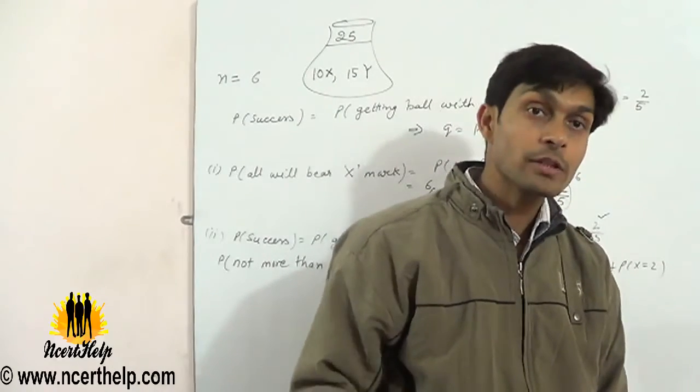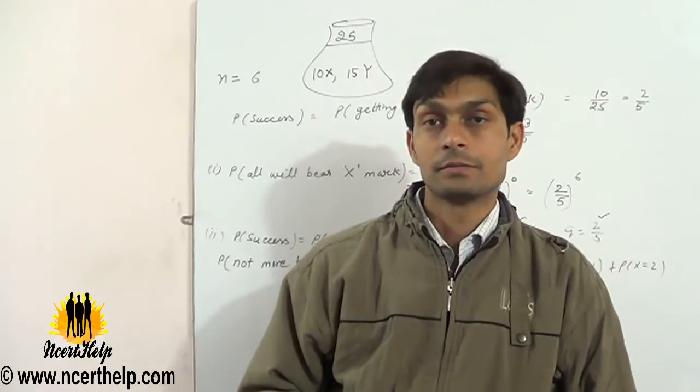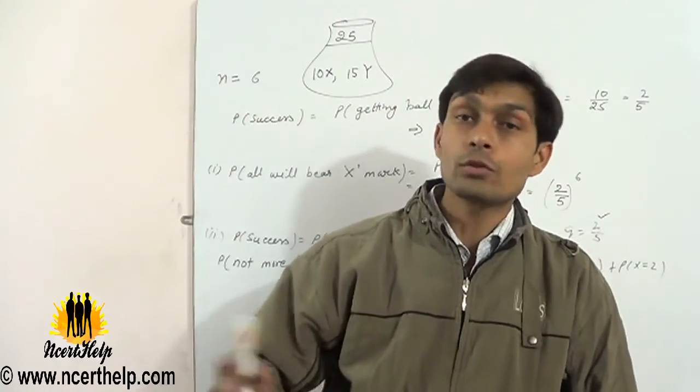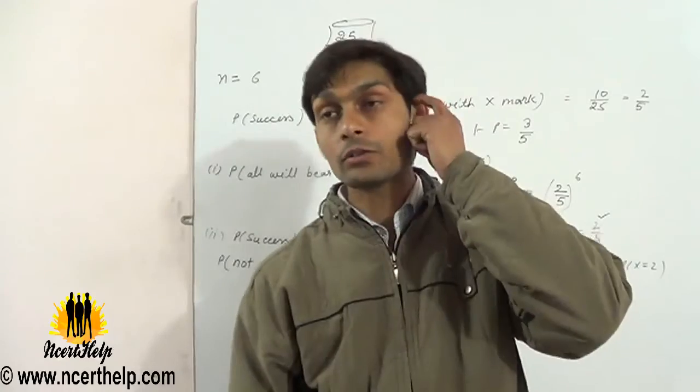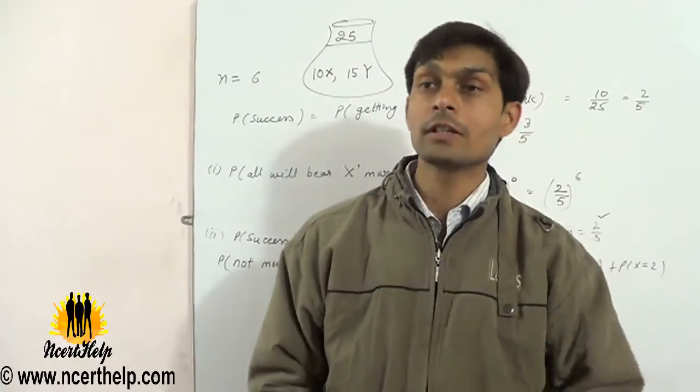When you have equal marks, you can consider either p or q as success, it won't make a difference. Whether you take X as success or Y as success, both will have power 3. If you have 5 balls, then it will not be equal.